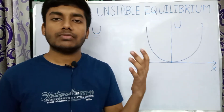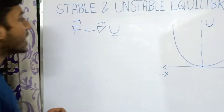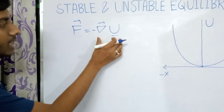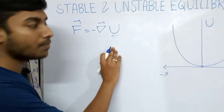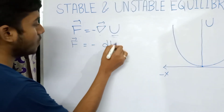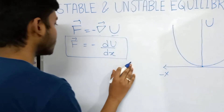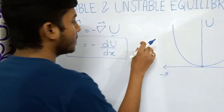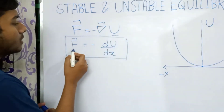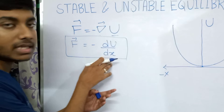For a conservative force field, the force F is the negative gradient of the potential energy U. For the one-dimensional case, F can be written as minus dU/dx. So if the potential energy U for a system is given to us, we can easily calculate the force for any point in that system by the expression F equals minus dU/dx.